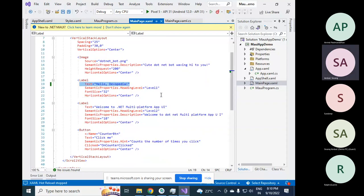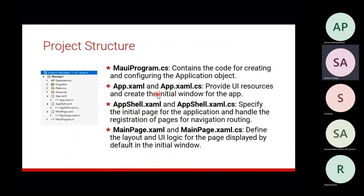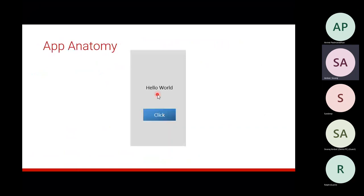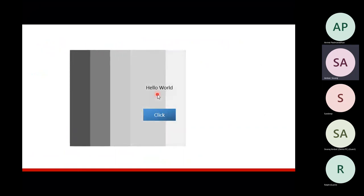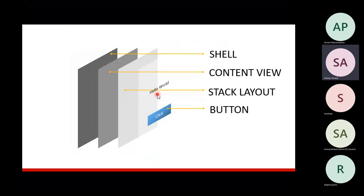Now let's understand the app anatomy. When you see an app with text and a button, the text is provided by a control called Label and the button is another control. These are arranged in layers: a Shell is the parent component, which displays a ContentView, which in turn displays a StackLayout. The StackLayout organizes elements — in this case vertically stacked. There are Vertical Stack Layouts, Horizontal Stack Layouts, and other kinds of layouts as well.